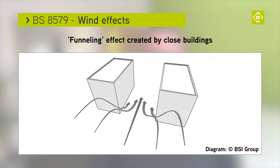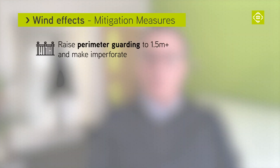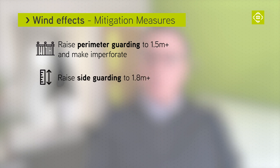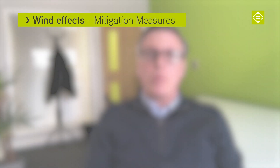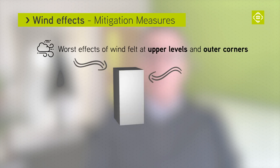Figure 3 provides a simple but very useful diagram to explain the funnelling effect created by buildings in close proximity to one another. Detrimental effects can only really be quantified using computational dynamic modelling or using models in a wind tunnel. Mitigation measures can include raising the height of the exposed perimeter guarding to 1.5 metres and making it imperforate, and raising the side guarding to 1.8 metres. Figure 5 explains that the worst net effects of wind will be felt at the upper levels and outer corners on rectangular blocks.